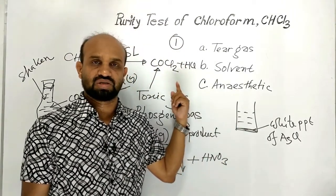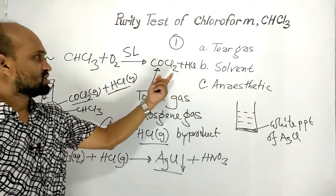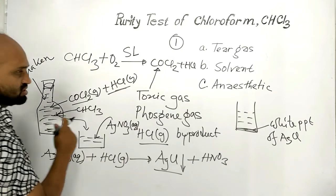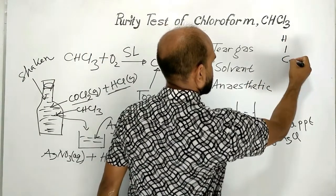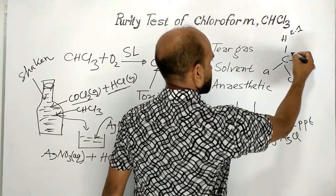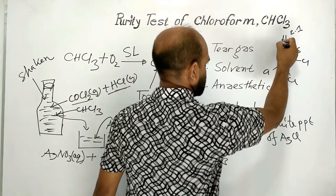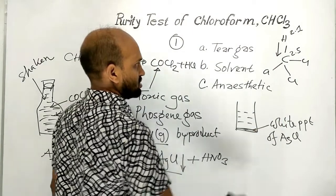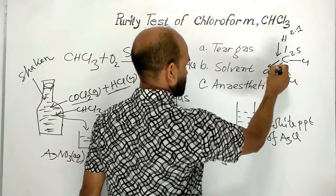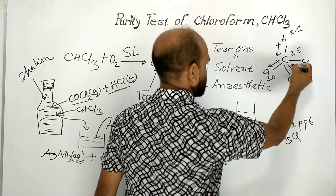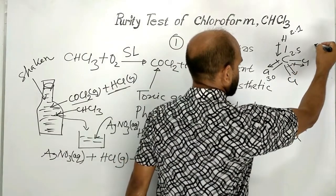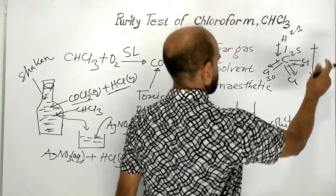This white precipitate of silver chloride proves the presence of the oxidation reaction through which hydrogen chloride gas is formed. Chloroform is a polar compound — the electronegativity of hydrogen is 2.1, carbon is 2.5, and chlorine is 3.0. These bonds are polarized, and the net dipole moment is in the downward direction.